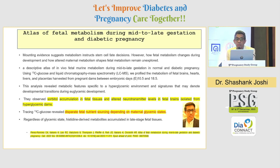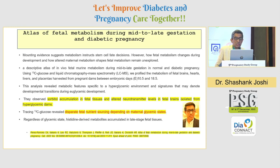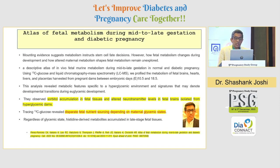We can study the impact of maternal glycemic state on fetal tissue, study each stage of the fetus, and study the interaction between maternal and fetal nutrient sensing. This atlas is now published — I would urge each one of you to read the full text. It clearly tells us the atlas of fetal metabolism in mid and late gestation and diabetic pregnancy. There is mounting evidence that metabolism instructs stem cell fate decisions and that fetal metabolism changes during development. Techniques such as radioisotopic labeling with C13 glucose and LC-MS have been used. Ramirez et al. profiled fetal brains, hearts, livers, and placentas harvested from pregnant glucose dams during embryonic days.